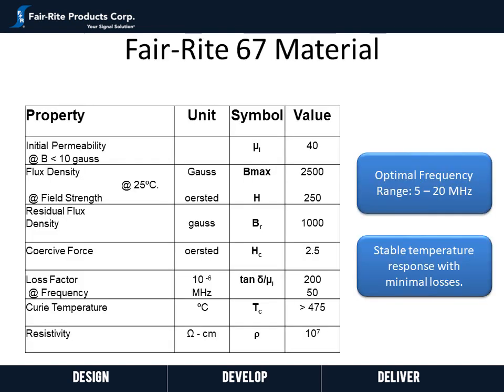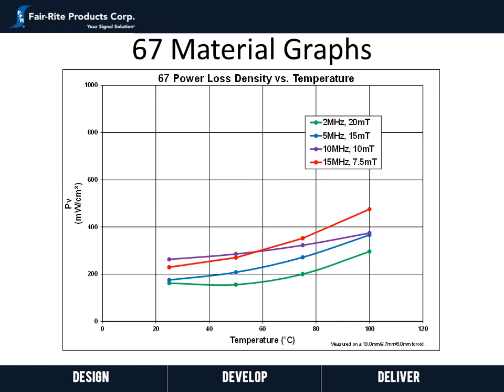Next we will look at Ferrite's 67 material. 67 material is a lower 40 permeability nickel zinc material with an optimal frequency range of 5 to 20 megahertz, performing well even beyond 20 megahertz. This material also has a fairly stable temperature response over its frequency range, as can be seen here where we are plotting power loss density over temperature at four frequencies and flux densities. In the frequency range of 2 megahertz to 15 megahertz, the power loss density is fairly stable, being lowest at 25 degrees C.